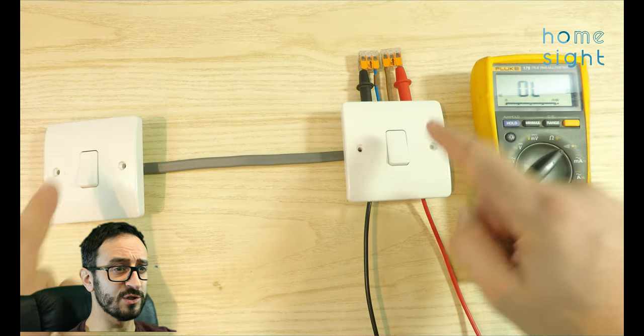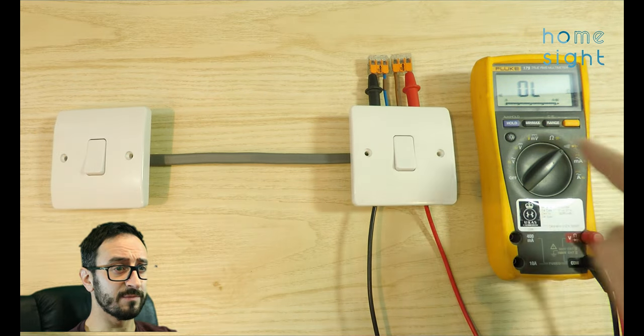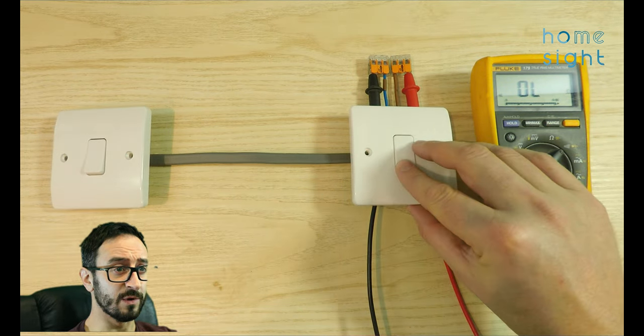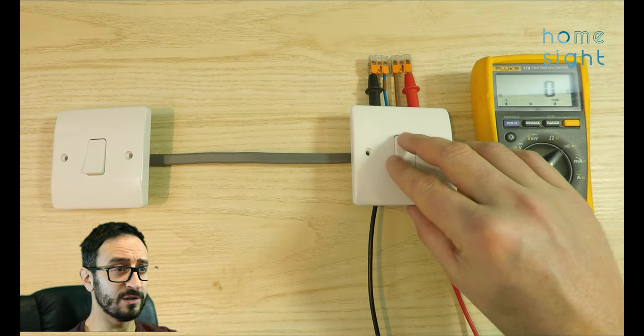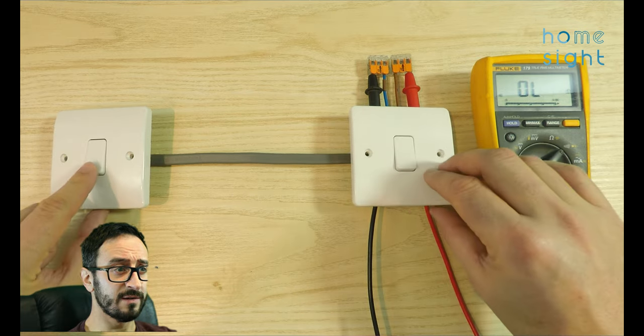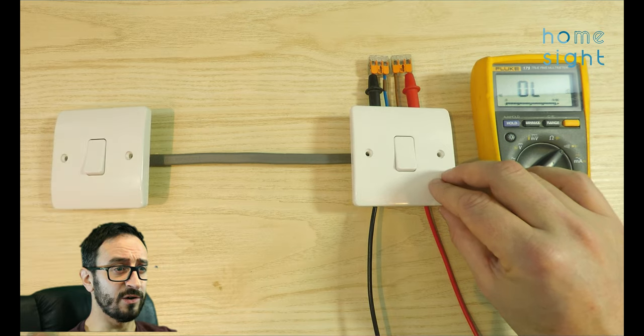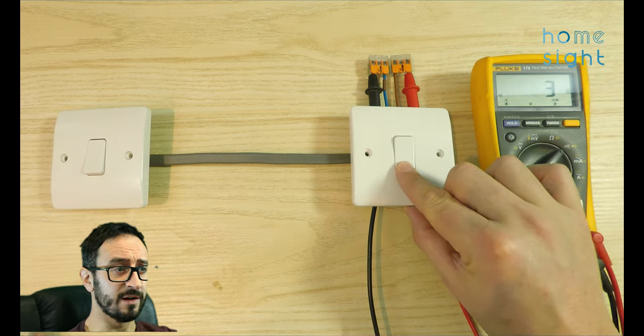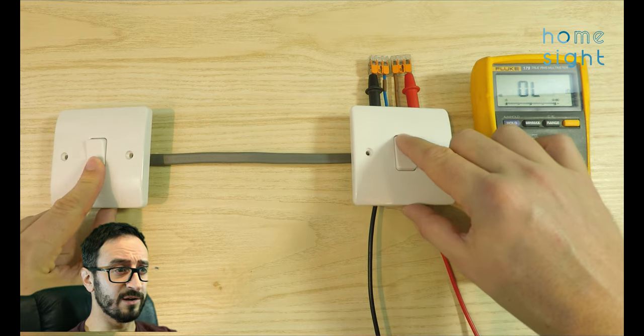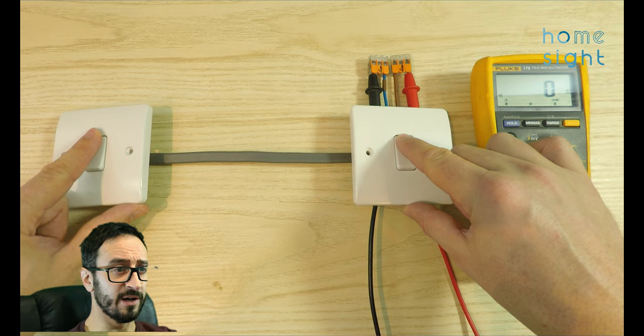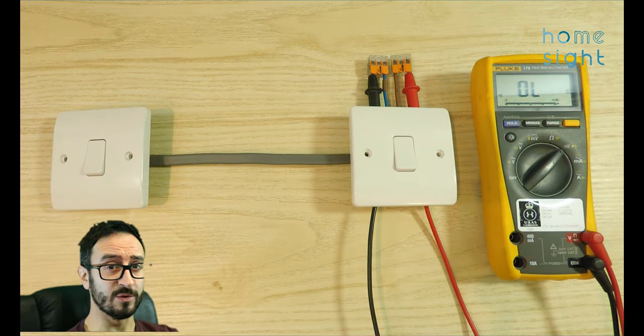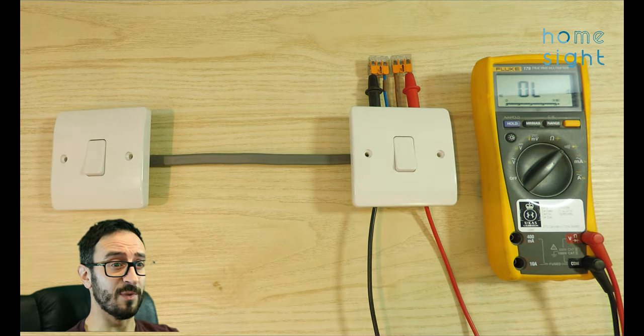Now I've got my multimeter set for continuity and it should beep. There we go so we can see that that's got connection at one end and the same for the other and I can turn it on at one end and off at the other and the same again on at one end off at the other. Great! Two-way light switching not as difficult as you might think.